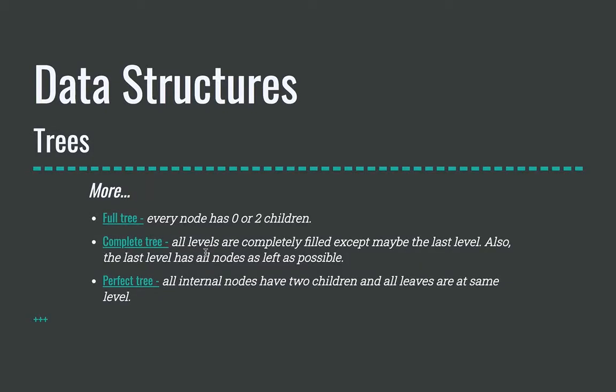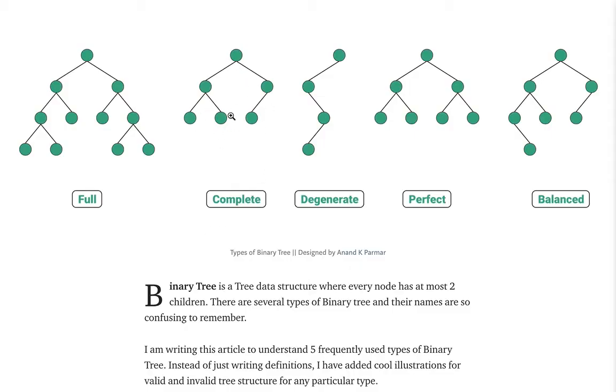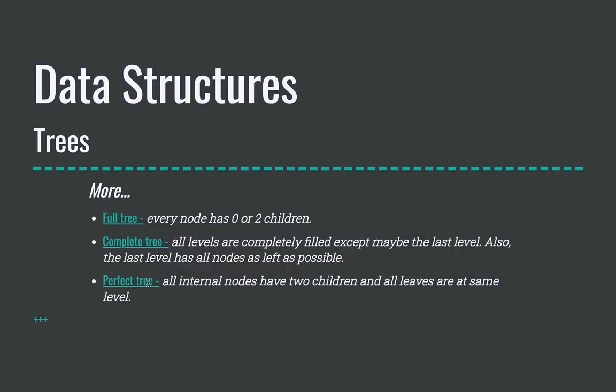Then you have a complete tree. So that's all levels are completely filled except maybe the last level. Also the last level has all nodes as left as possible. So let's look at a complete tree. So right here, this is a complete tree. All the nodes that the leaf nodes are at the same level, but this node, which only has one child, it is as left as possible. So this is a complete tree right here. So we've went over full tree, complete tree. Now we have one more to go over.